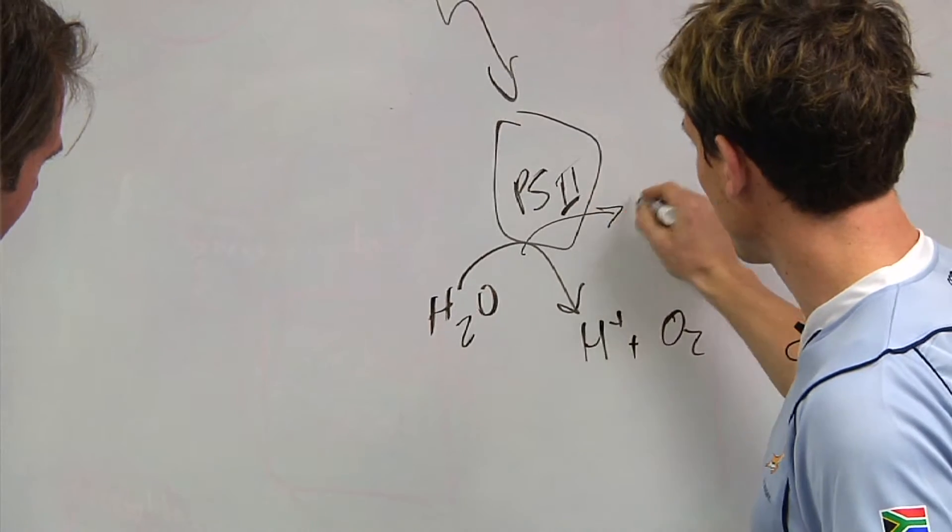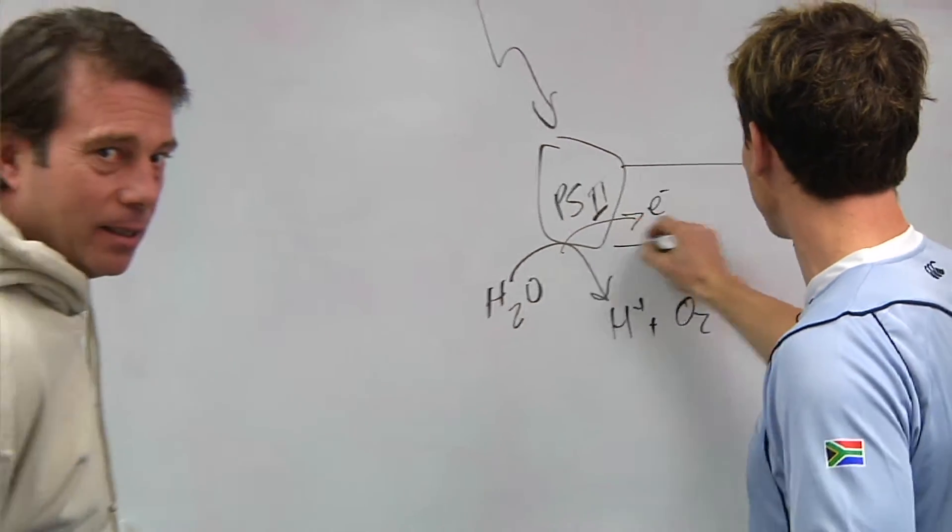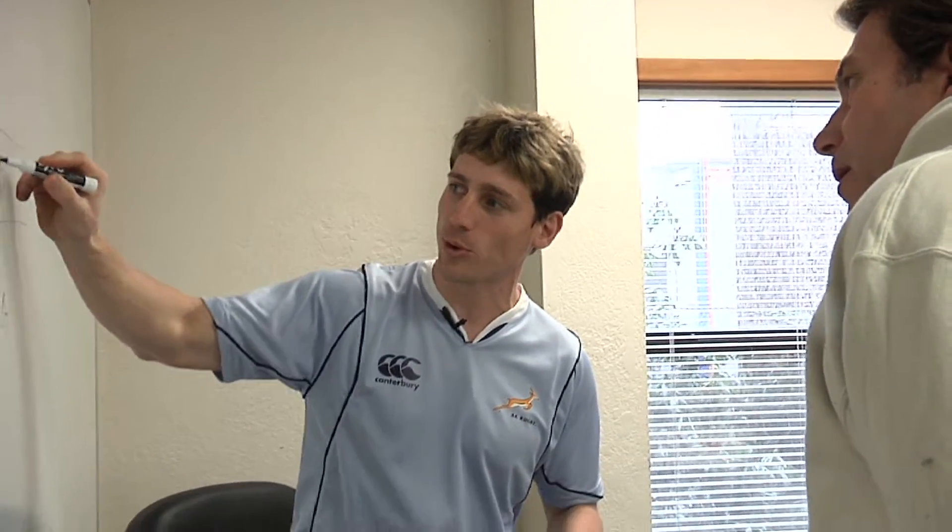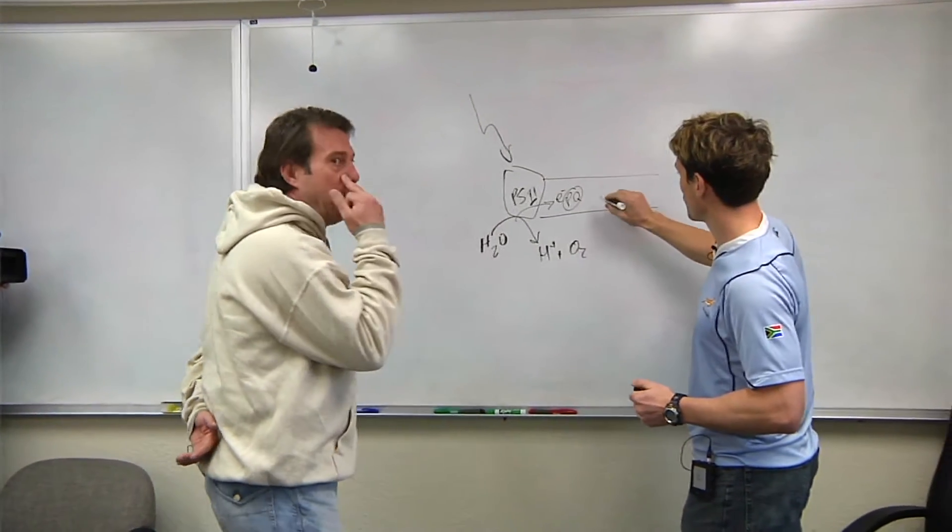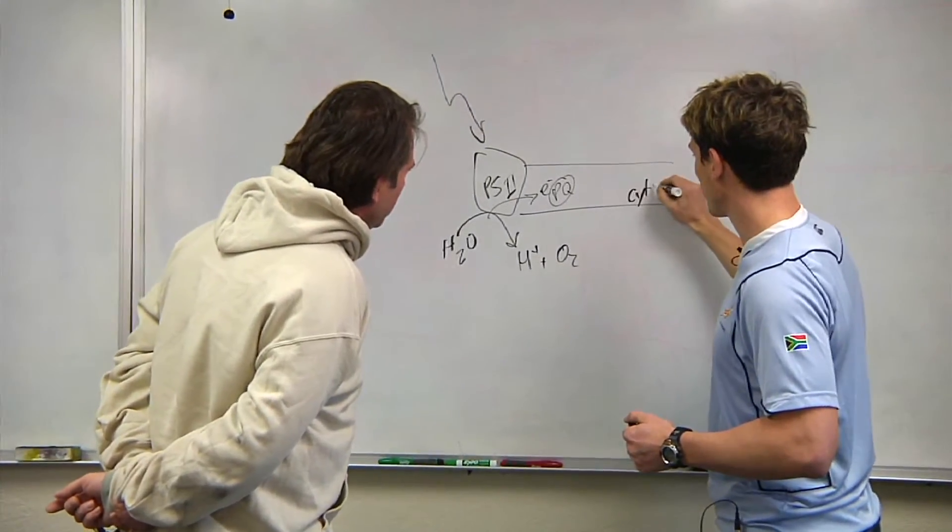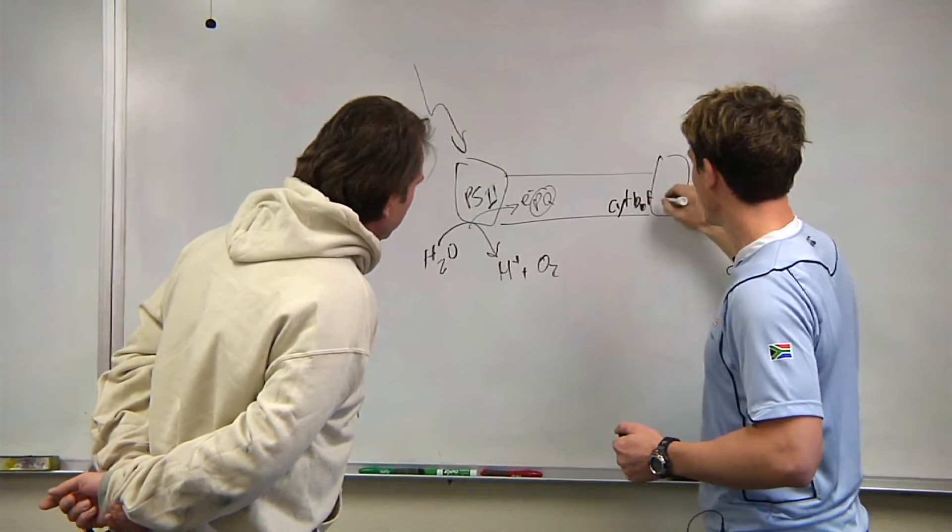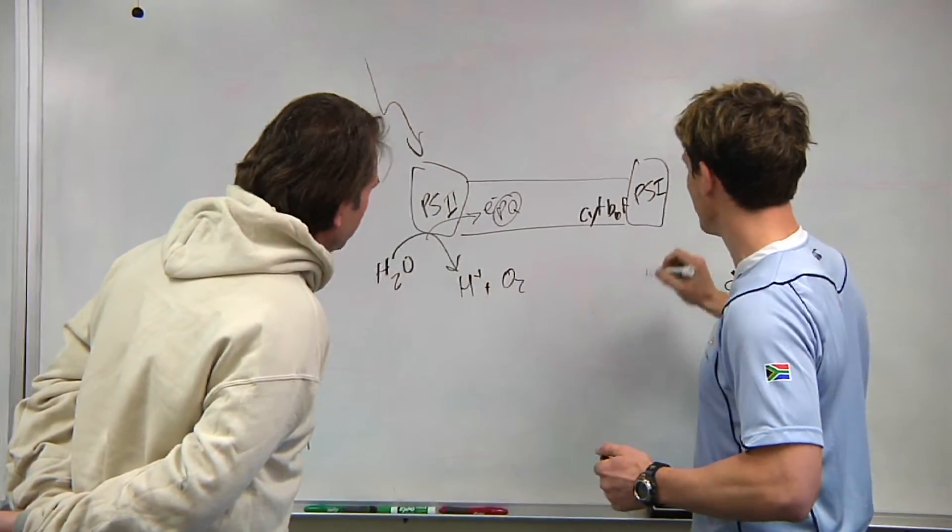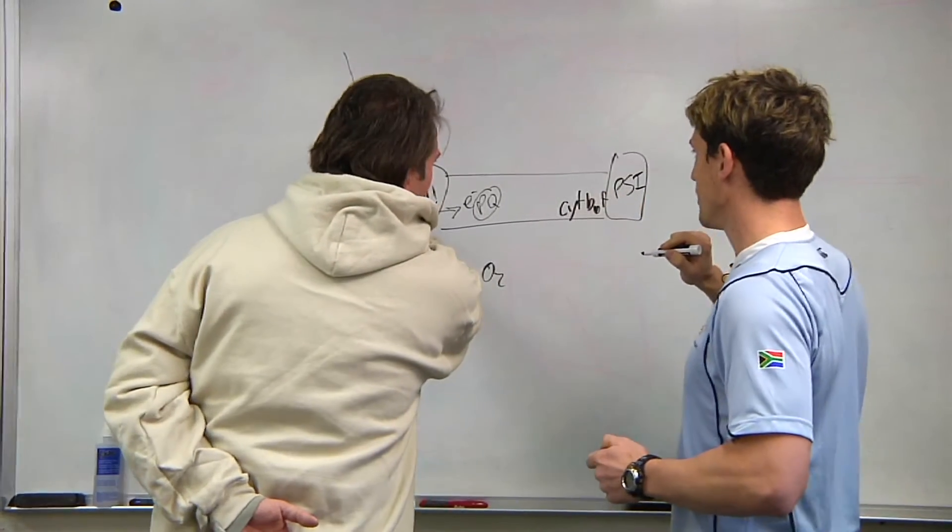The electrons sort of stay in some protein carriers in this thylakoid membrane. There's a compound called plastoquinone, and then it goes through a couple other protein complexes. There's another one called cytochrome b6f and from there it goes to PS1 as opposed to the PS2.